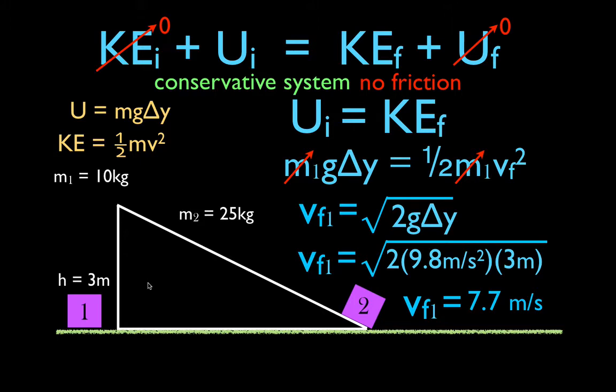You should already know from physics that the final velocity does not depend on mass when something falls straight down. Everything, independent of mass, accelerates at the same rate: 9.81 meters per second squared, the acceleration due to gravity.